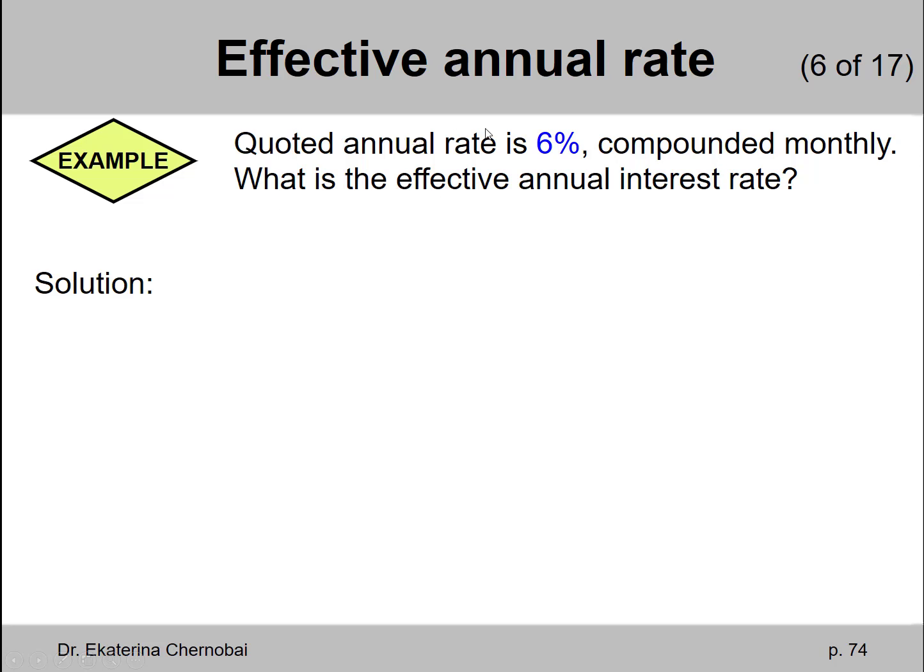Example: quoted annual rate is 6% compounded monthly. What is the effective annual interest rate?